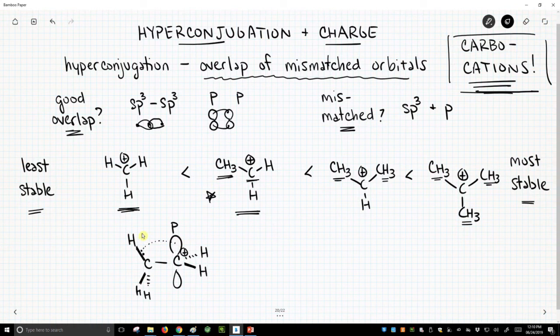We're trying to take this sigma bond, which is made from our sp3 hybrid on carbon, and we're trying to interact it with the p orbital. It's not a very good interaction, but at least it's something. And so this interaction is a stabilizing effect. This is the hyperconjugation.